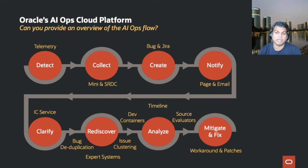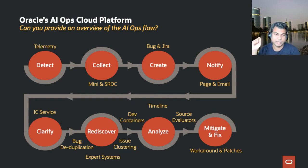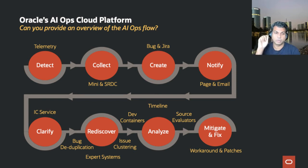For new issues, we stage all the data in a container that allows developers to identify what the issues are, and we can issue mitigation fixes and apply online patches to our environment. This is an entire end-to-end flow: something goes wrong, we collect the necessary data and telemetry, notify the appropriate people, look for existing issues and weed them out, look for new issues, stage the data for developers, and then mitigate and fix across our cloud.